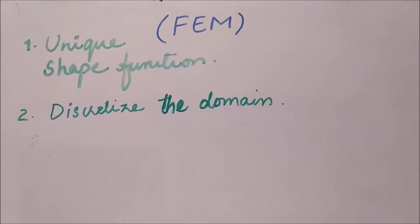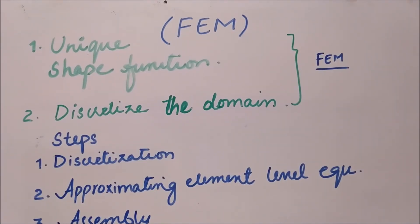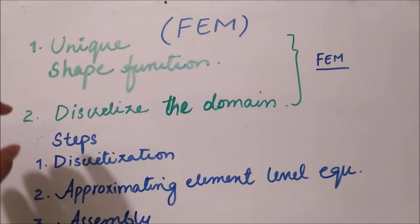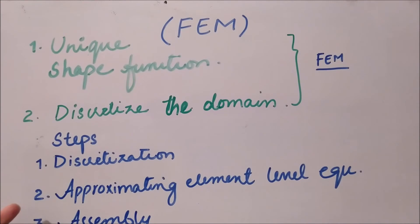In the three videos on the direct method, we covered six main steps, and these six steps are also a part of FEM. The difference is that the FEM steps operate at the element level, and the difference will only be on the second step. The very first step is discretization of the domain, which is the main point of FEM. The second step is approximating the element-level equation.